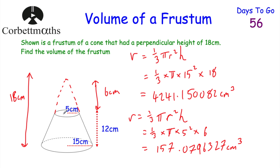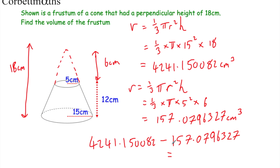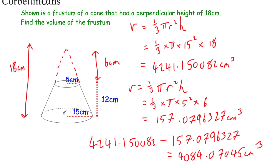We've got the volume of the whole cone and the volume of the small part that was removed. Taking them away gives 1300π, or 4086.07045 centimetres cubed. So that's the volume of that frustrum — if you got that, well done.